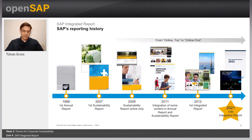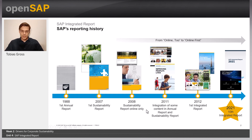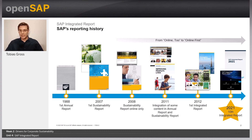We started our journey back in 1988 with our first annual report — quite a short report, basically containing only a balance sheet and profit or loss statement. In 2007, we released our first sustainability report, now also providing insights into SAP's environmental and social performance. A year after that, the decision was taken to no longer print the sustainability report, rather publish it online only. In 2011, we started to combine the sustainability report and the annual report, moving contents from the sustainability report into the annual report, though we still released two separate reports.